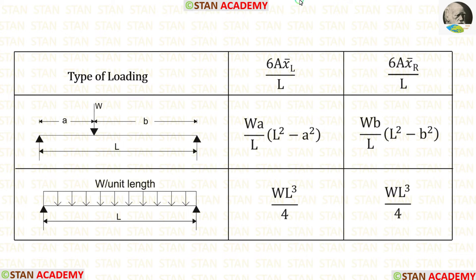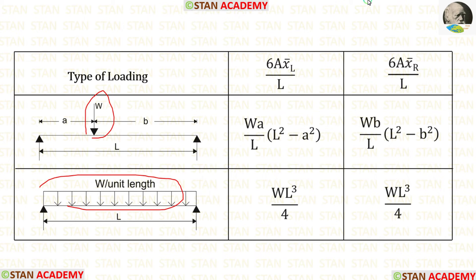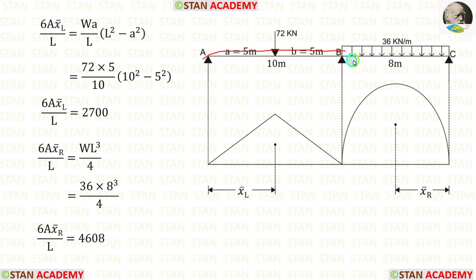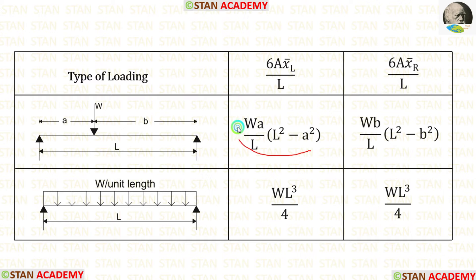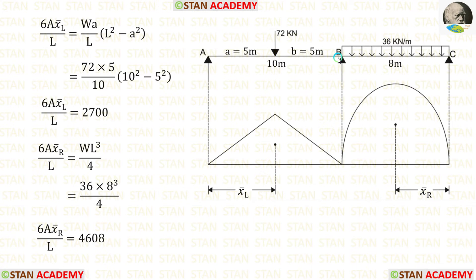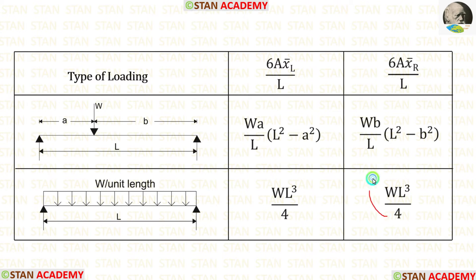We can analyze this beam alternatively using formulas. If in the exam you are given a table of formulas, or if you can memorize them, this method is very easy. In most exam problems, point loads and UDLs are common, so it is very useful to memorize these formulas. In the first span we are having a point load, so we have to find 6A·x-bar-left/L and choose the corresponding formula. In the second span we are having UDL, so we have to find 6A·x-bar-right/L and choose that formula.